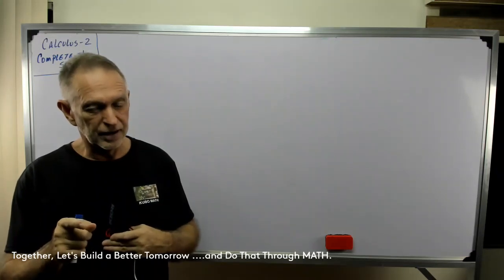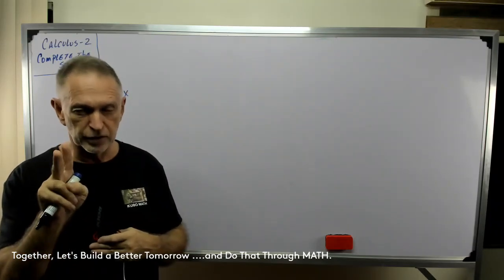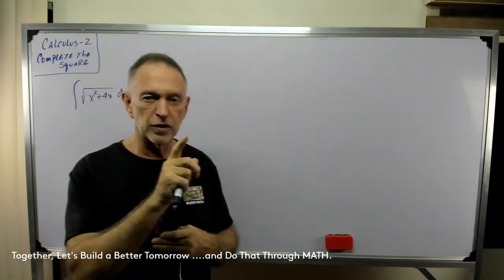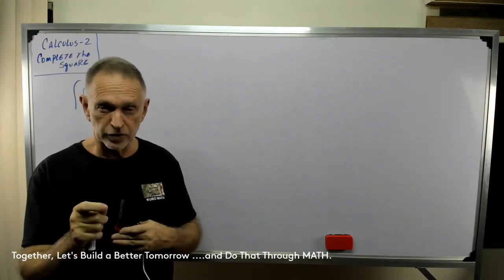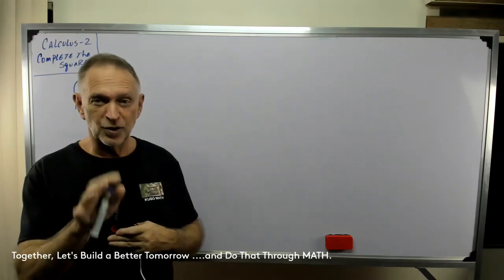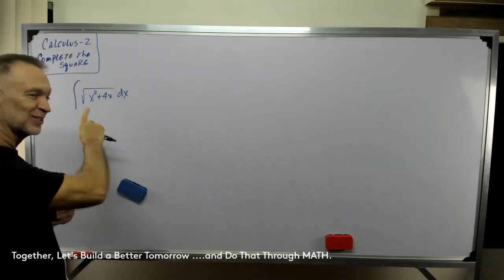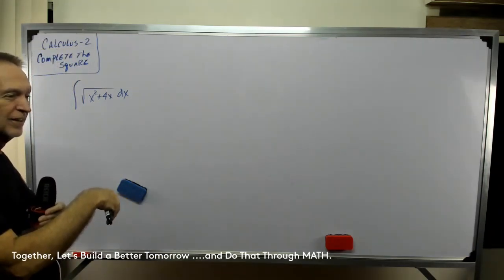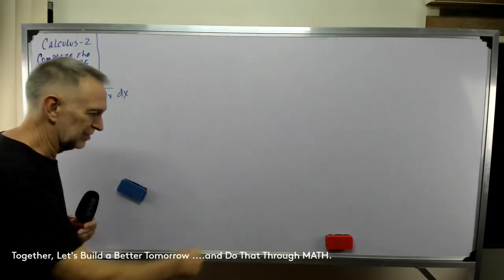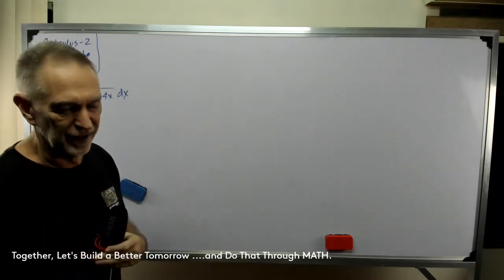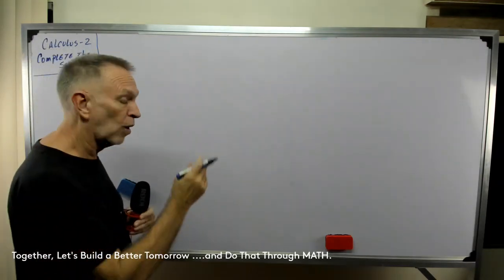Now before we jump into that, we're going to solve a couple of integrals — one of them using U-sub, and the second one we'll use integration by parts — because we're going to need the answers to those two integrals to solve this completing the square. I don't want to just go through this exercise and then say, oh by the way, that's this, and just throw a big long something out there. So let's work through those. We've had U-sub, we've had integration by parts, so we can do this.